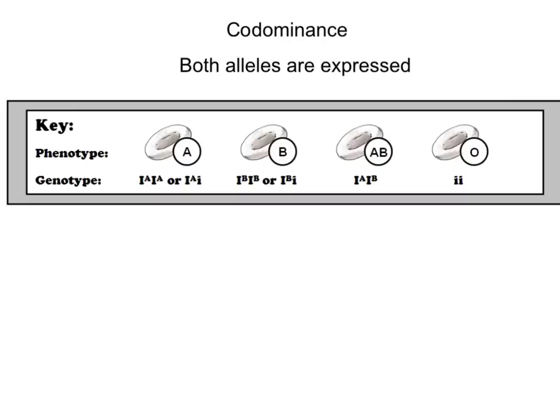Today's video will be short. I want to talk about the differences between co-dominance and incomplete dominance versus what we talked about in the last video, which was complete dominance — where if I had a big R and a little R, the flower would be red. It wouldn't be pink or have polka dots. So what we're talking about is things where one allele is not completely dominant over the other.